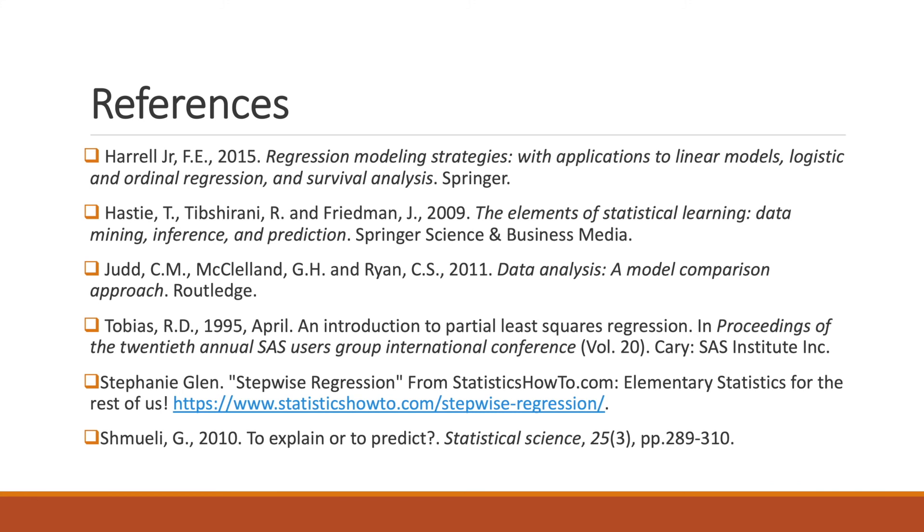Here are some references. I would like to highlight the first two references. The first one is a book from Professor Frank Harrell. I would highly recommend it if you are interested in more details about stepwise regression, which are mentioned in Chapter 4. This book also covers useful strategies and relevant R code for the development of a regression model. The second reference is also a book, which is written by Professor Hastie, Professor Tibshirani, and Professor Friedman. This book is a really nice book on statistical learning, and it covers the LASSO and partial least squares in Chapter 3.